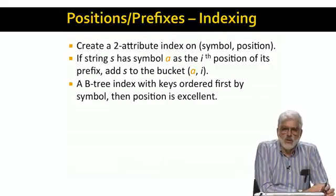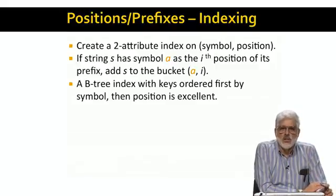Incidentally, we still recommend the B tree indexed by keys AI, ordered first by the symbol A and then by the position I. But there are many suitable forms of index structure. And the important thing is that given A and I, we can get to the bucket for A and I quickly.